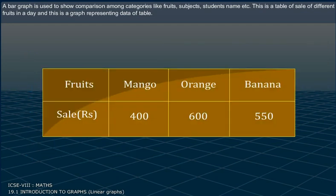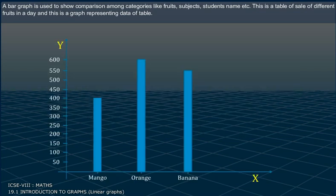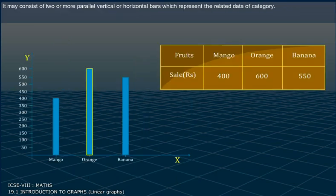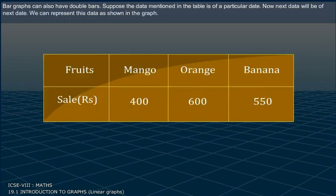This is a table of sale of different fruits in a day and this is a graph representing data of the table. It may consist of two or more parallel vertical or horizontal bars which represent the related data of category.